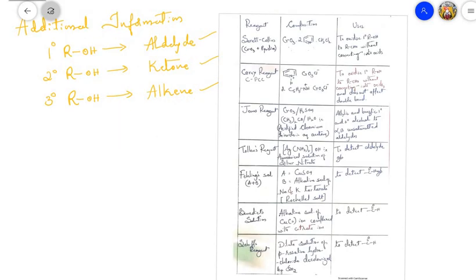Next is a chart of special reagents, their compositions, and uses. First: Sarett's reagent — a mixture of chromium trioxide (CrO₃) and two molecules of pyridine in dichloromethane solvent. It is used to oxidize a primary alcohol to an aldehyde, stopping at the aldehyde stage without further converting it to a carboxylic acid. Second: Corey's reagent (PCC) — pyridinium chlorochromate (C₅H₅NH⁺·CrO₃Cl⁻) — also used to oxidize a primary alcohol to an aldehyde without converting to acid, and importantly does not affect C=C double bonds.